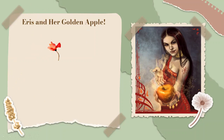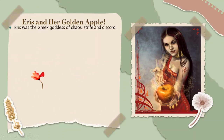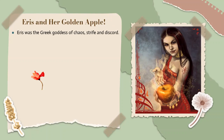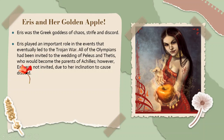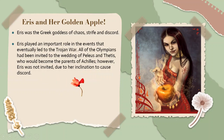It goes back to the story of Eris and her golden apple. Eris was, based on some versions, the daughter of Hera and Zeus, and she was the goddess of chaos, strife, and discord. Eris played an important role in the events that eventually led to the Trojan War. All of the Olympians had been invited to the wedding of Peleus and Thetis, who would become the parents of Achilles. However, Eris was not invited due to her inclination to cause discord — they thought she would create chaos and strife among the gods.